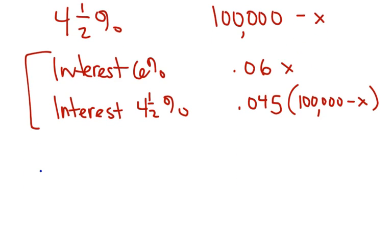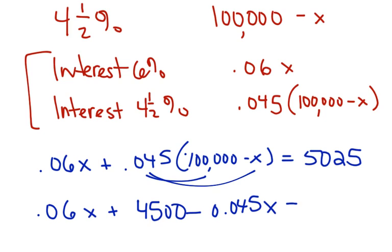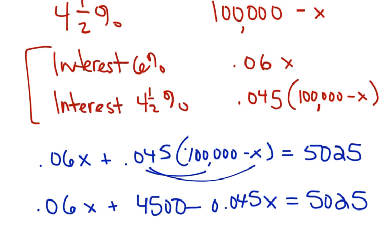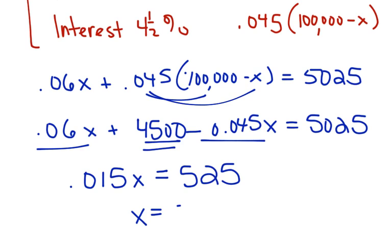So what am I going to do? I'm going to do 0.06X plus 0.045 times 100,000 minus X, and that's going to equal 5,025. Now I have an equation that I know how to solve. So I'm going to start by distributing 0.06X plus 4,500 minus 0.045X is equal to 5,025. And then I'm going to combine some like terms. I'm going to get 0.015X. And then I'm going to take the 4,500 and subtract it from the other side. I'm going to get 525. And then I'm going to divide by 0.015, and I'm going to get X is 35,000.